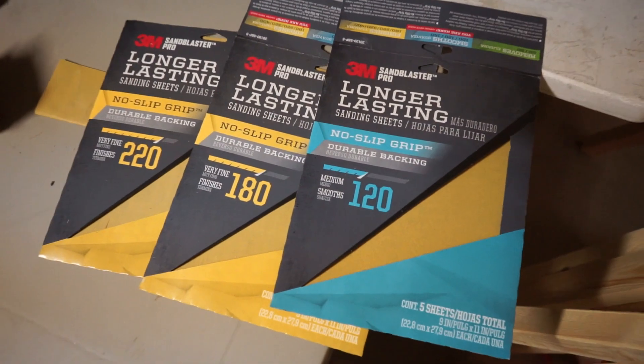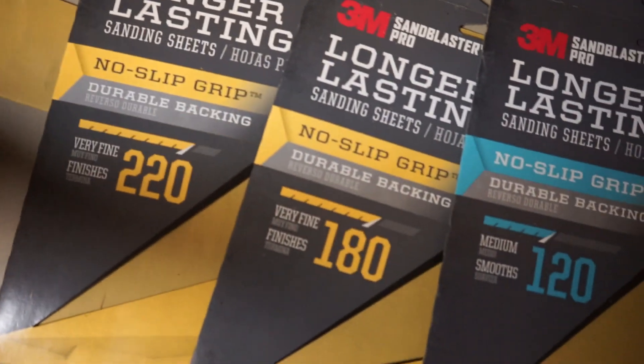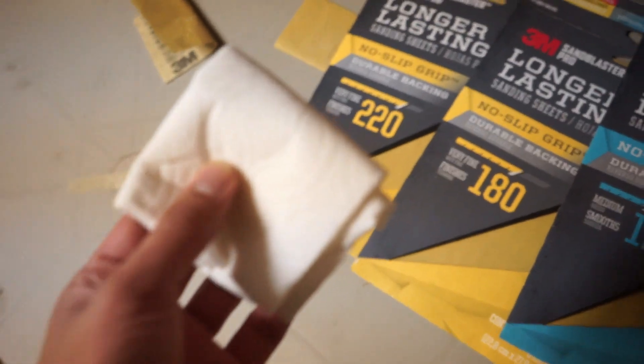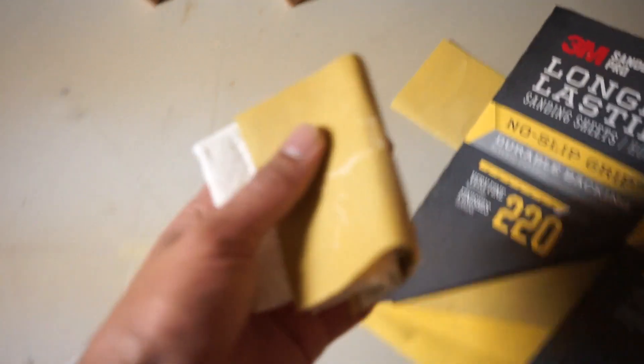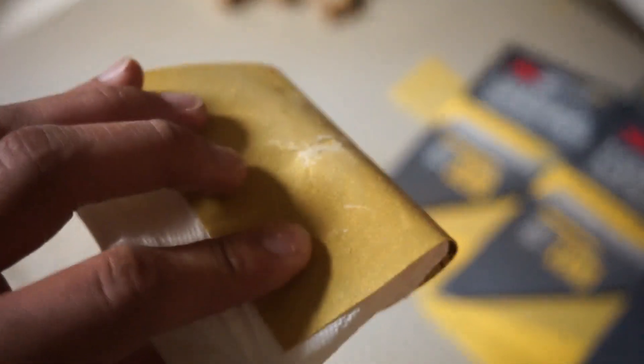So the way I sanded mine is I did the tallest blocks, my number fours, with all three of these sandpapers, but otherwise the other ones I did with the 120 and the 180 because those ones are going to be hidden between the sticks and you don't really want to have to waste your time on those ones.